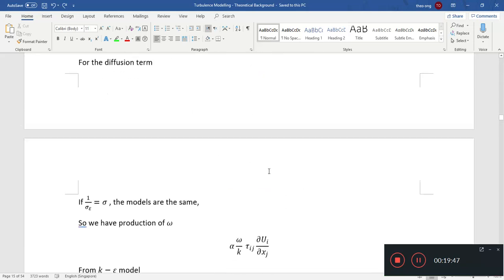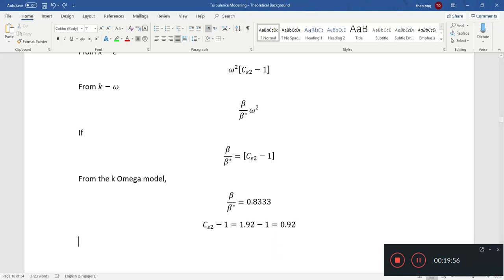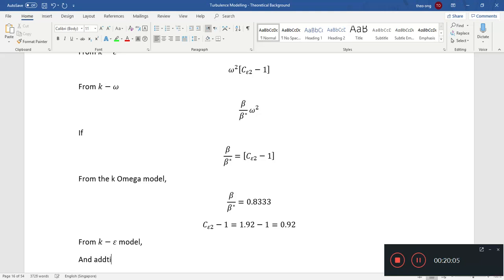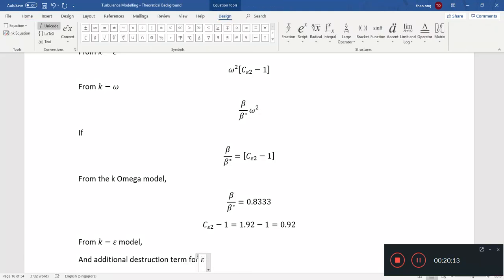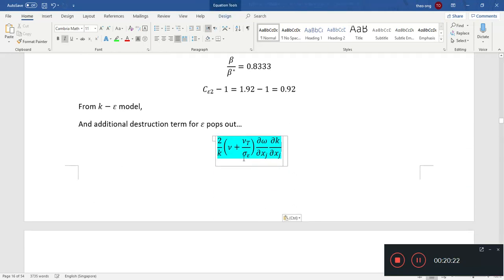Now, the special term that pops out from k-epsilon model, an additional destruction term for epsilon pops up. So this is the term. It is a destruction term for epsilon. If this quantity increases, epsilon will decrease. So k-epsilon has an additional destruction term for epsilon. Meaning, if this term is positive, you'll have more kinetic energy, turbulent kinetic energy all around. So this extra term pops out.